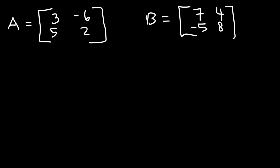Let's say matrix A is 3, -6, 5, 2, and matrix B has the elements 7, 4, -5, and 8. Now let's say we're given the equation 3A plus X equals 2B. What is the value of X?